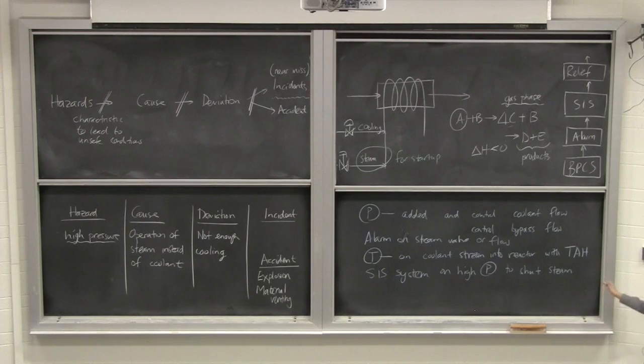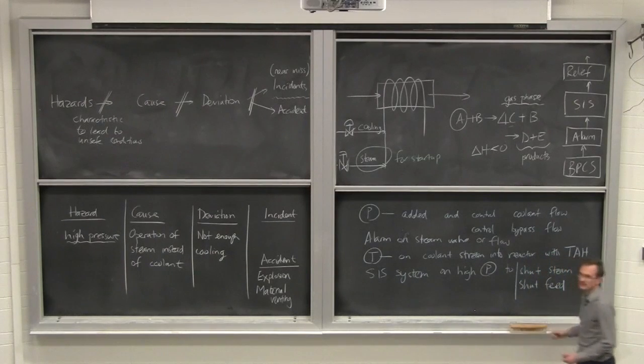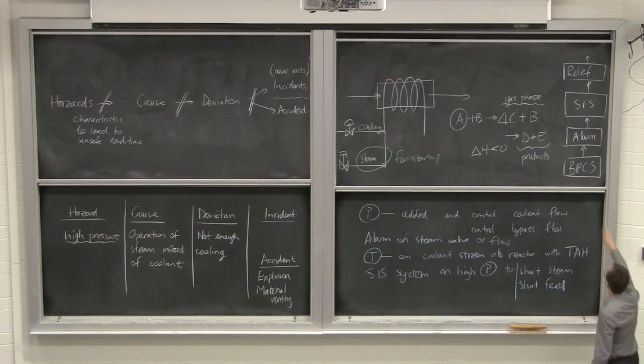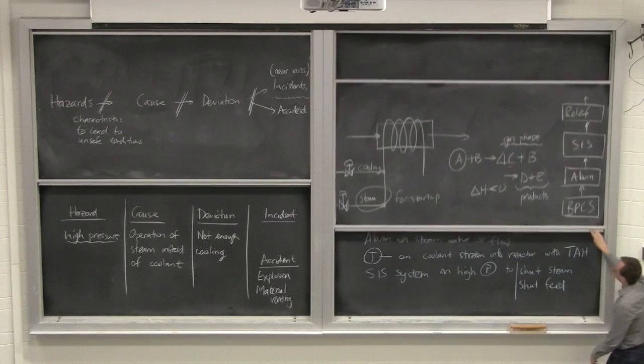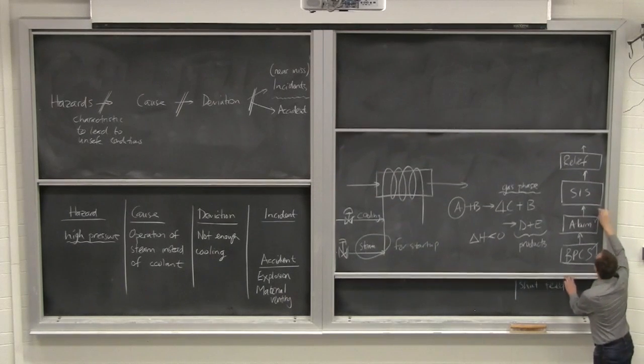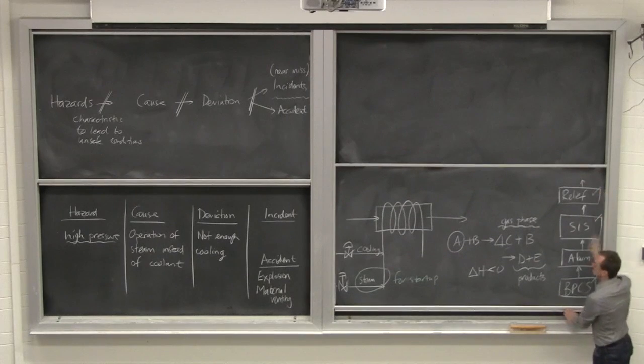So SIS system on high pressure to shut steam, okay? And you probably want to consider that SIS not only shutting steam, but also shutting feed, to shut steam and to shut feed. Okay, so we could go, and this is what we should be doing, going down, every one of those suggestions actually triggered one of these. We could go address this problem with the basic process control system, with alarms, or with SIS, and we could have even put on relief.